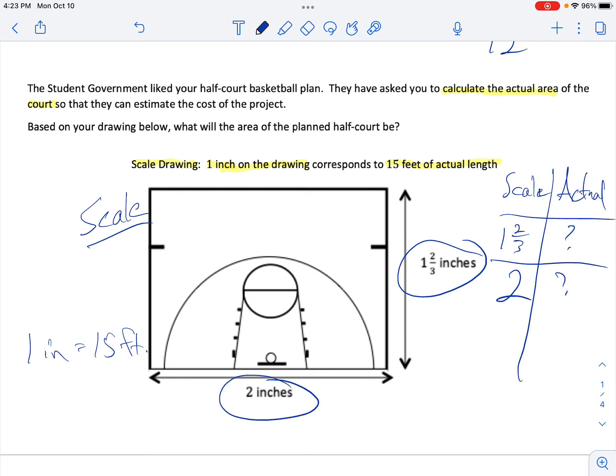Here, the scale, we have 1 and 2 thirds and 2. We need to find the actual. We also know that 1 inch on the scale equals 15 feet. It's a little sloppy. Let's draw that again. Scale. Actual. 1 inch equals 15 feet. We have 1 and 2 thirds inches, and 2 inches.